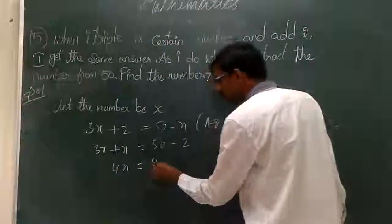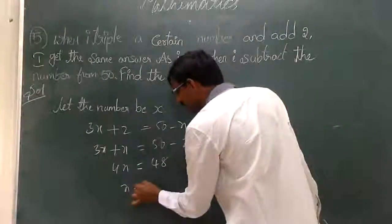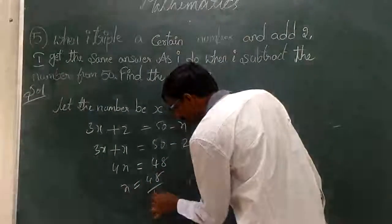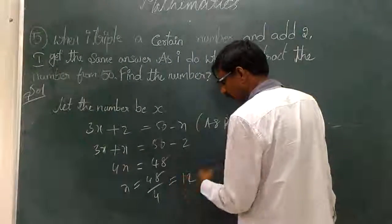So therefore, 4x is equal to how much? 48. Then x is equal to 48 by 4, that is equal to how much? 12.